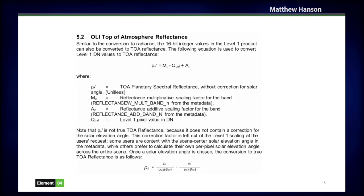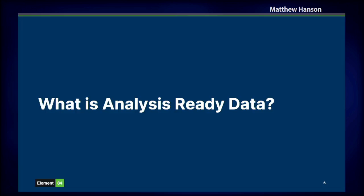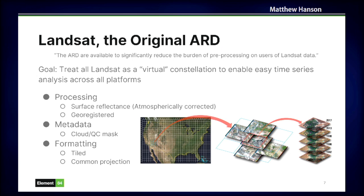The Landsat program then started releasing ARD — the USGS actually coined the term and came out with this ARD project. The idea was that all of the Landsat satellites, the whole constellation, could be constructed into a time series. The data was tiled in a regular projection, atmospherically corrected, geo-registered, and included a cloud mask so that you could create these time series.